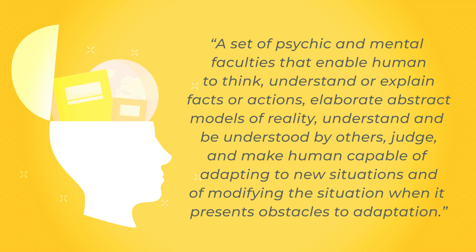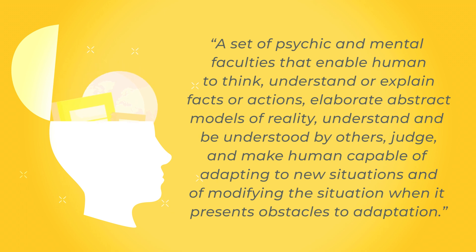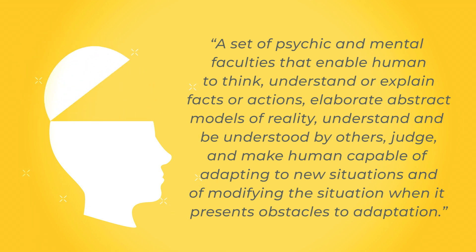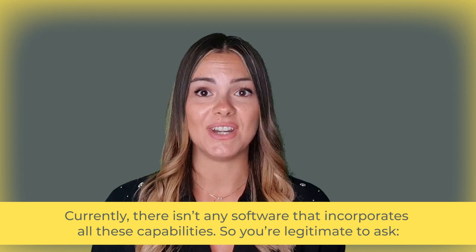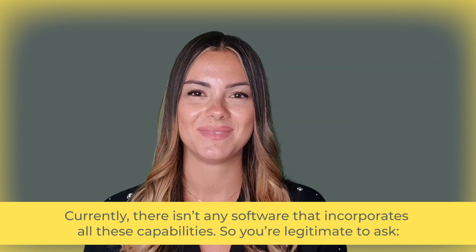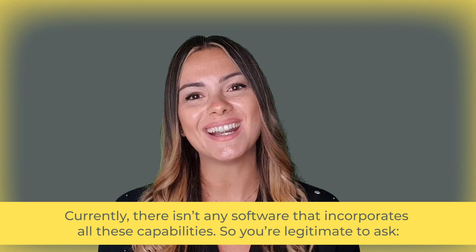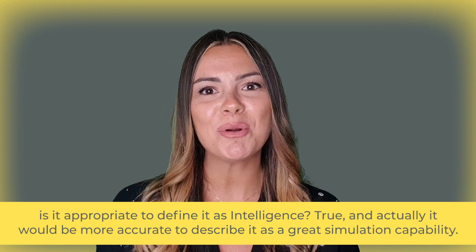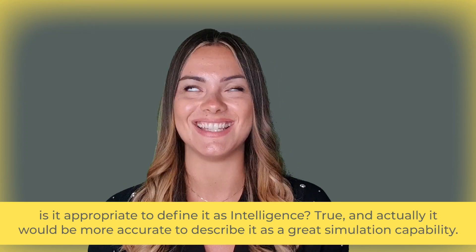Human intelligence also includes the ability to elaborate abstract models of reality, understand and be understood by others, judge, and adapt to new situations — or modify situations when they present obstacles to adaptation. Currently, there isn't any software that incorporates all these capabilities, so you are legitimate to ask: is it appropriate to define it as intelligence?